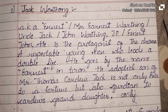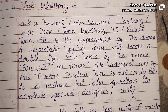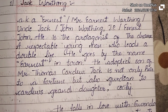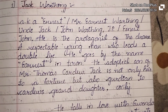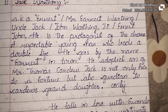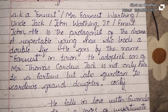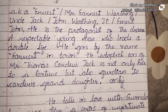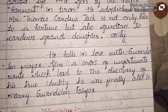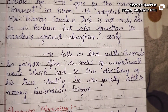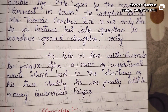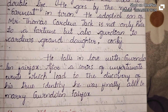Jack Worthing, also known as Ernest or Mr. Ernest Worthing, Uncle Jack, John Worthing JP, and Ernest John. He is the protagonist of the drama — a respectable young man who leads a double life. He goes by the name Ernest in town. He is the adopted son of Mr. Thomas Cardew, and Jack is not only heir to a fortune but also guardian to Cardew's granddaughter Cicely. He falls in love with Gwendolyn Fairfax, and after a series of unfortunate events leading to the discovery of his true identity, he was finally able to marry Gwendolyn Fairfax.